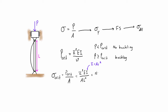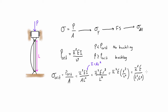Substituting that in, A cancels with the one on the bottom, so we get pi squared E times R squared over L squared. We can reorganize this: pi squared E times R squared over L squared is the same as pi squared E divided by L squared over R squared, which can also be written as pi squared E divided by the quantity L over R, squared. So the critical stress equals pi squared E over the quantity (L/R) squared.